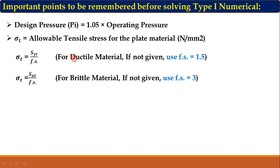Sometimes the numerical will not mention whether the material is ductile or brittle. In that case, look at the given strength: if Syt (yield strength) is given, it is a ductile material — assume fs = 1.5 if fs is not given. If Sut (ultimate tensile strength) is given, it is a brittle material — assume fs = 3 if fs is not given.